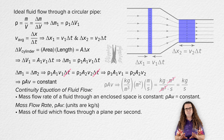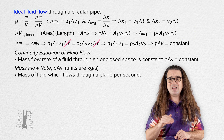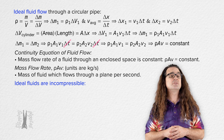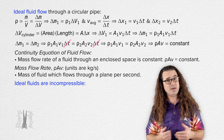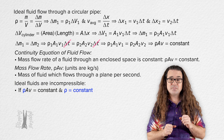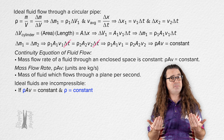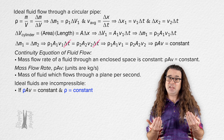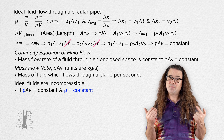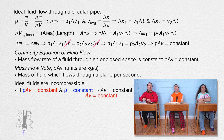We are specifically talking about ideal fluids, and ideal fluids are incompressible. That means the density of ideal fluids remains constant, and if the density of the fluid does not change, it can be removed from the mass flow rate equation.